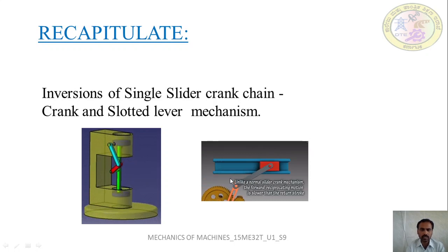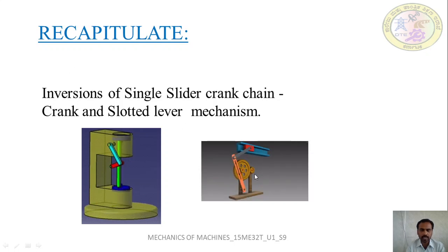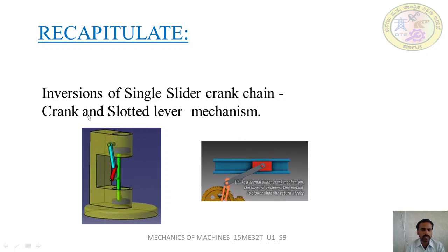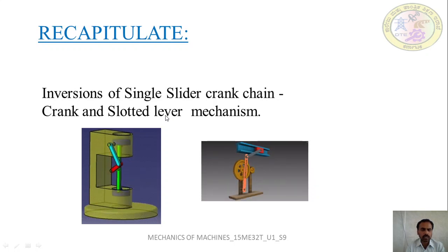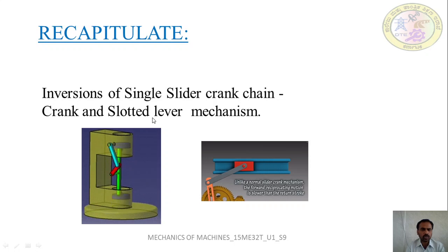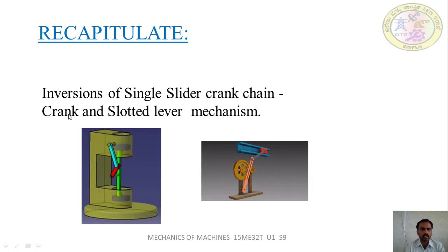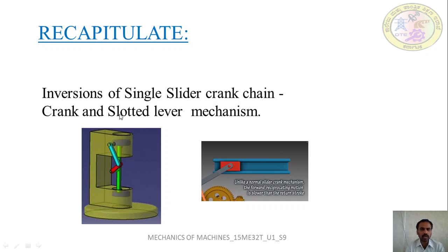Here you can see the animation of the crank and slotted lever mechanism and how it works. This mechanism is obtained by fixing the connecting rod, that is link 3. It is called a quick return motion mechanism because the return stroke happens at a faster rate in less time compared to the cutting stroke. The crank and slotted lever mechanism converts rotary motion of the crank into the reciprocating motion of the ram, and is used in shaping machines, slotting machines, and pick and place mechanisms.